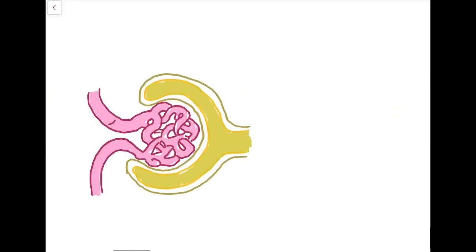Ultrafiltration occurs at the glomerulus, where there is an afferent arteriole and an efferent arteriole. There is blood within the glomerulus that needs to be filtered in order to form urine. We can't let all substances in the blood enter the urine, so the endothelium membrane of the glomerulus and the Bowman's capsule is adapted so that certain substances will be kept within the body.